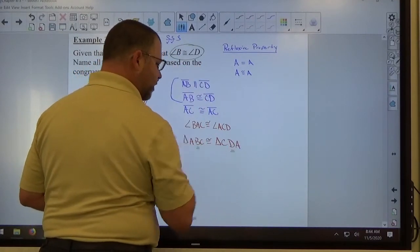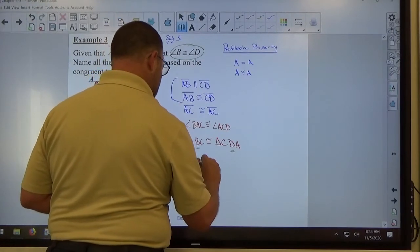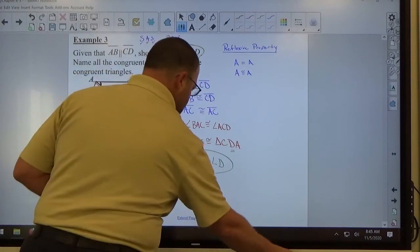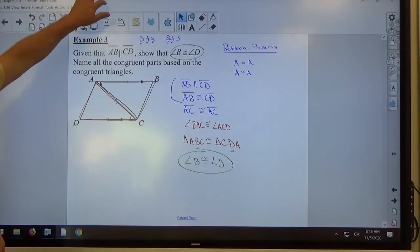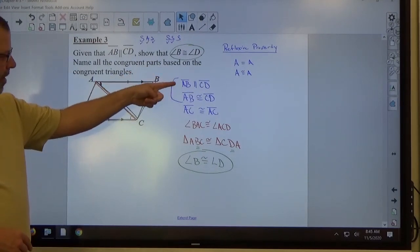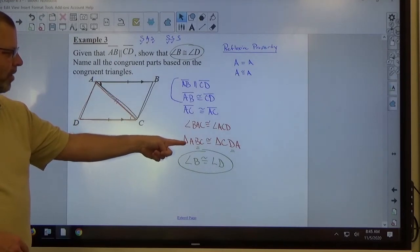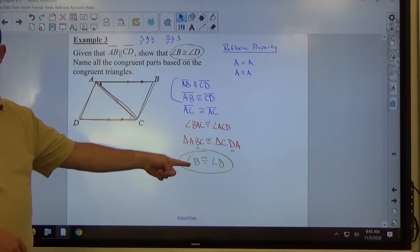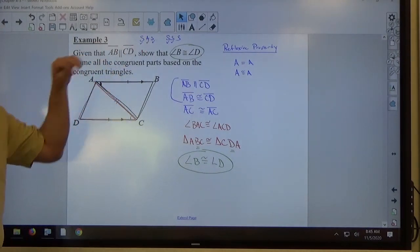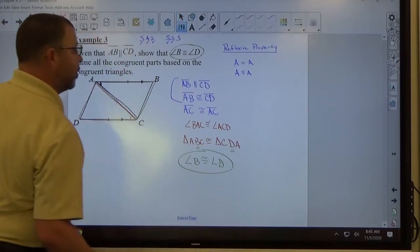B is second, D is second. So now angle B is congruent to angle D. Right. Not a proof, but it kind of felt like a proof, right? Given information with reflexive property, alternate interior angles, side-angle-side, corresponding parts of congruent triangles are congruent. All the theorems that we're dealing with right now, plus stuff we learned from other chapters.